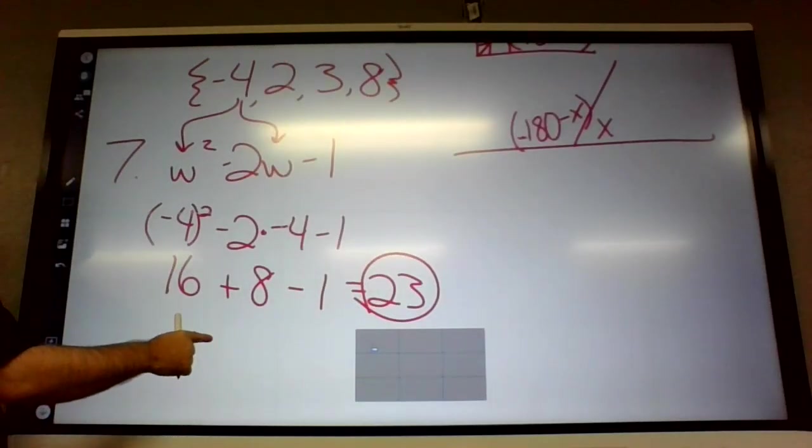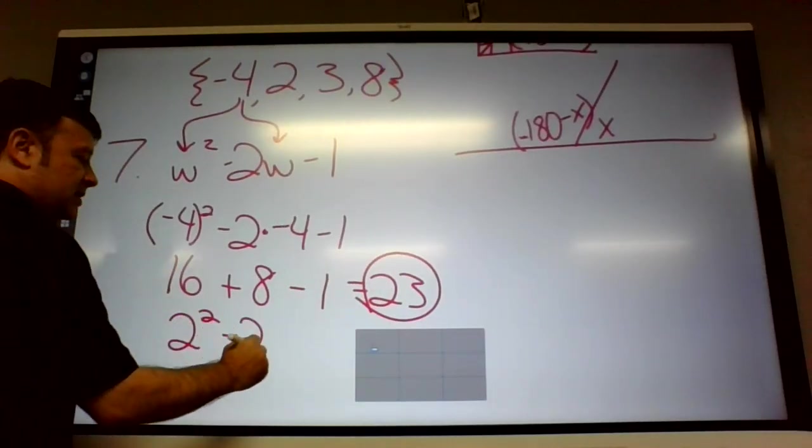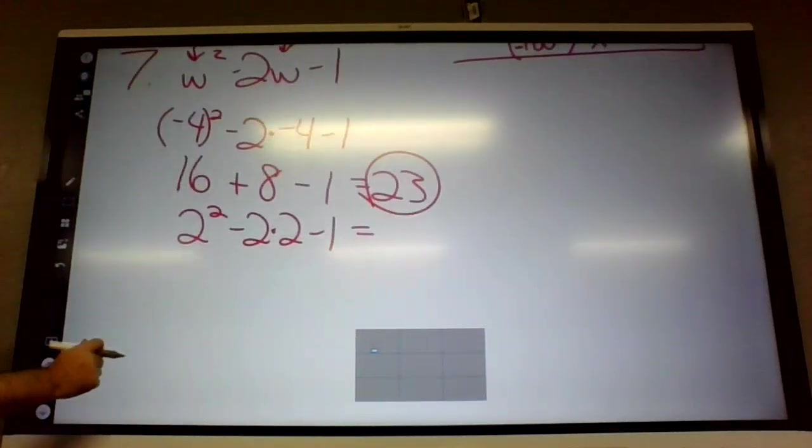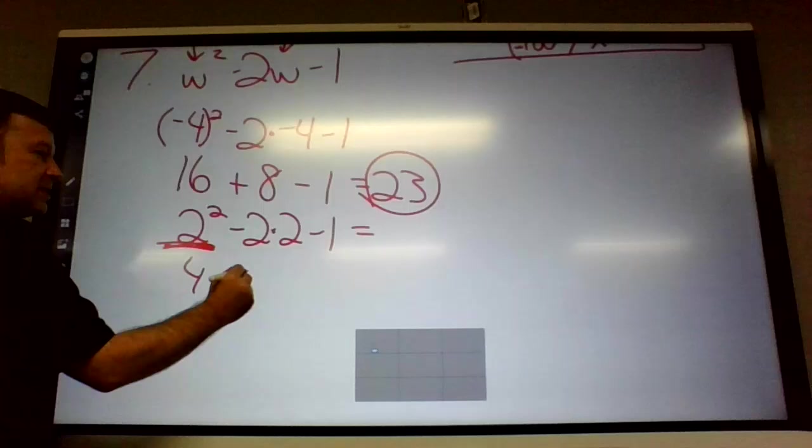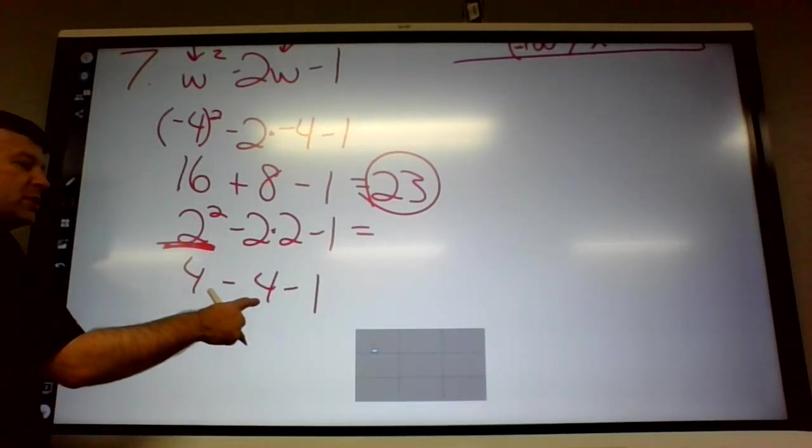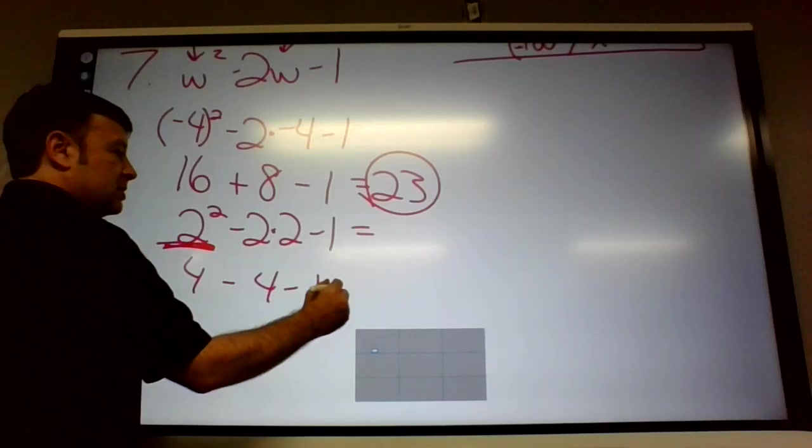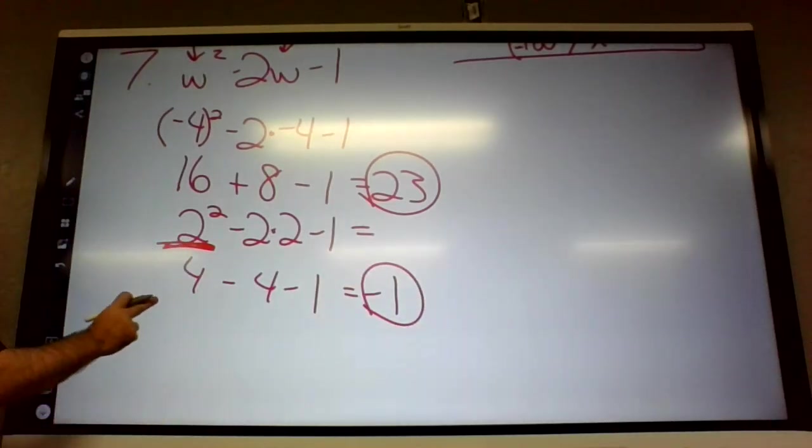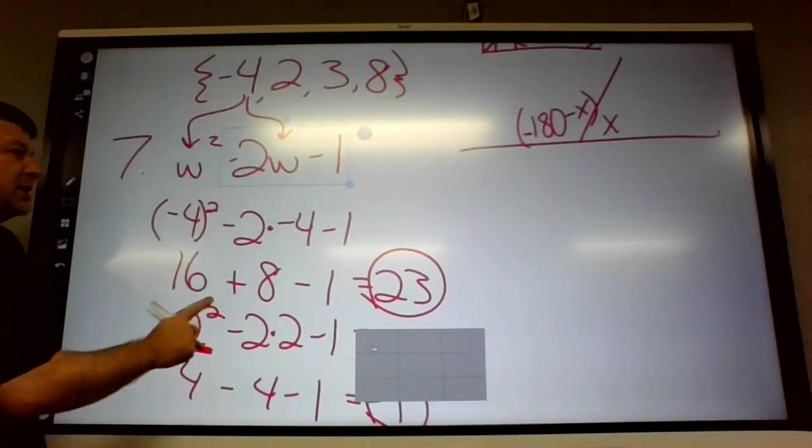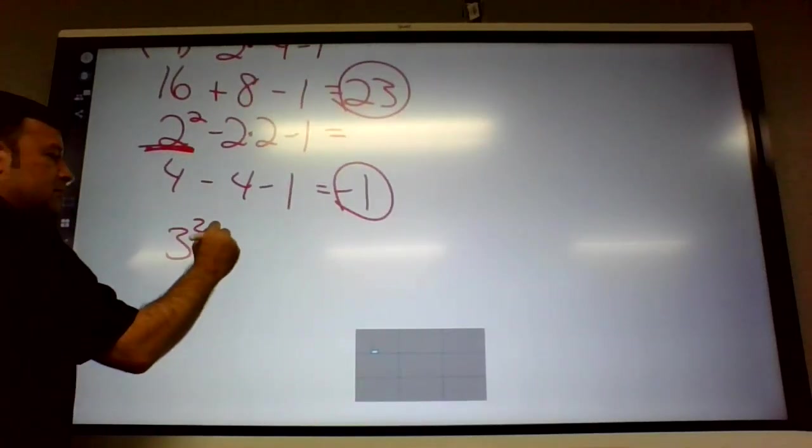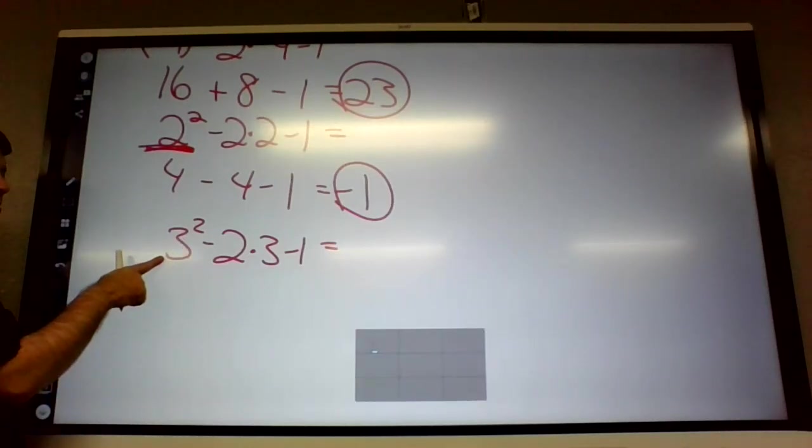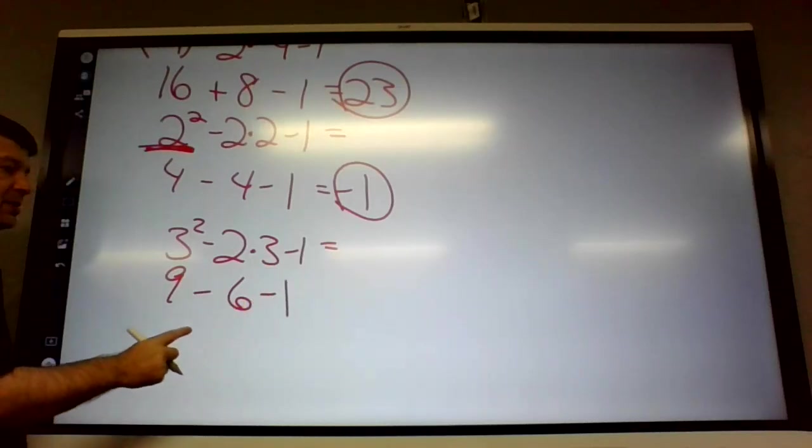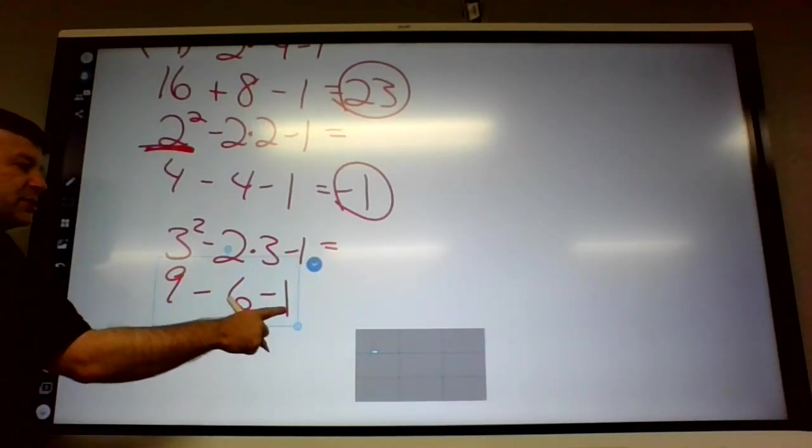So that's answer number one. And then we're going to plug in two, so two squared minus two times two minus one. Notice I am using order of operations. Two squared is first, four, and then two times two is next. And then the subtraction at the end, four minus four is zero, minus one, negative one.